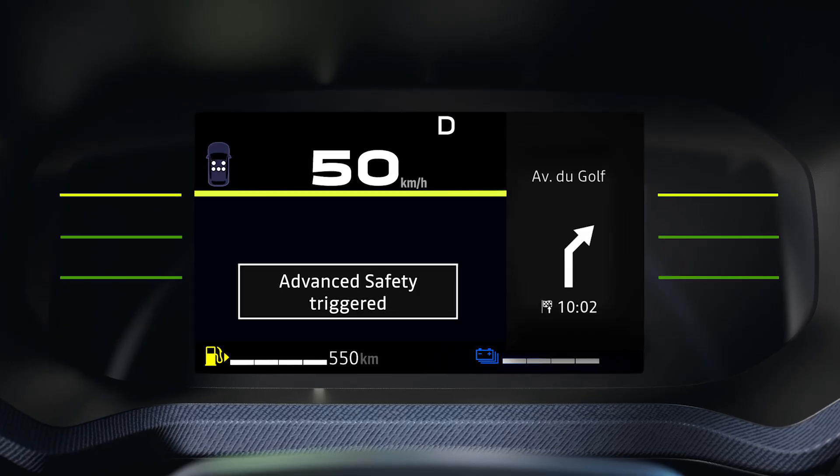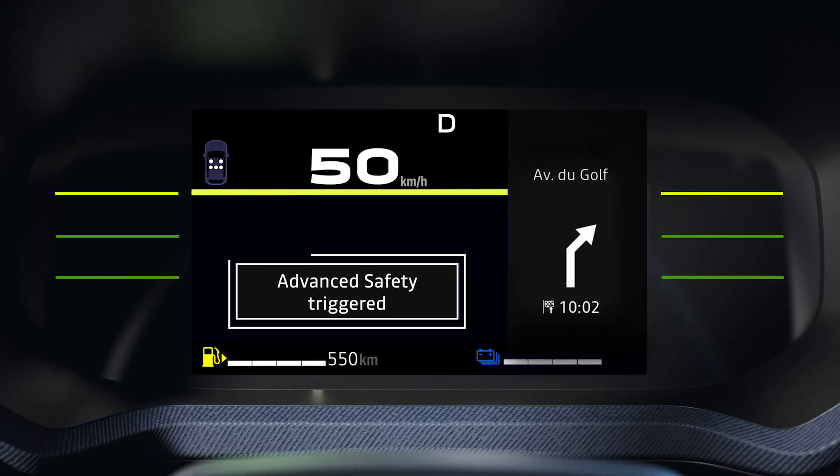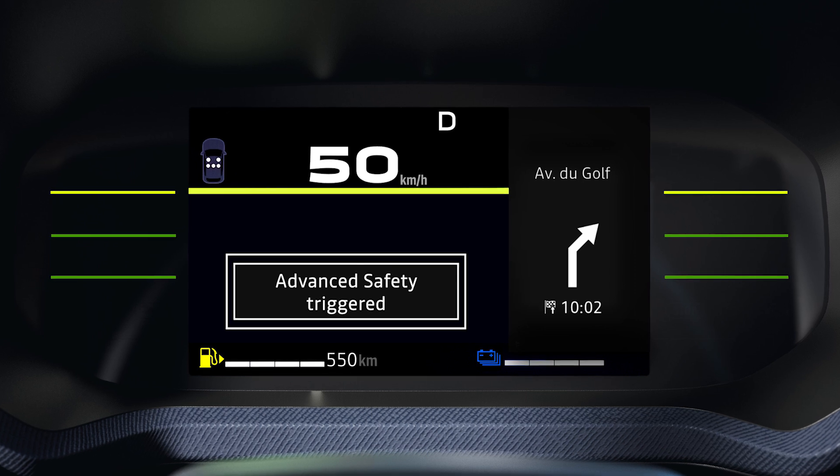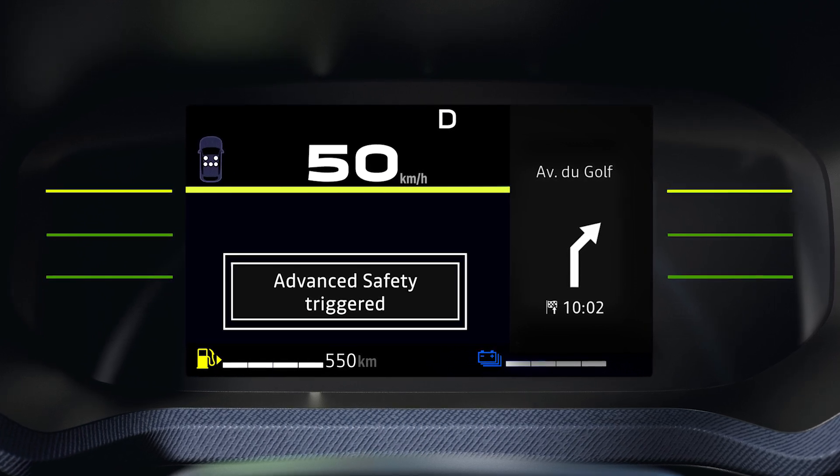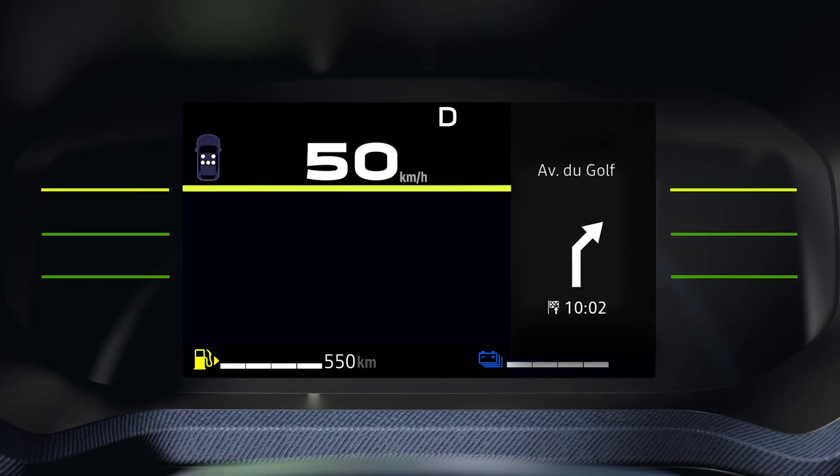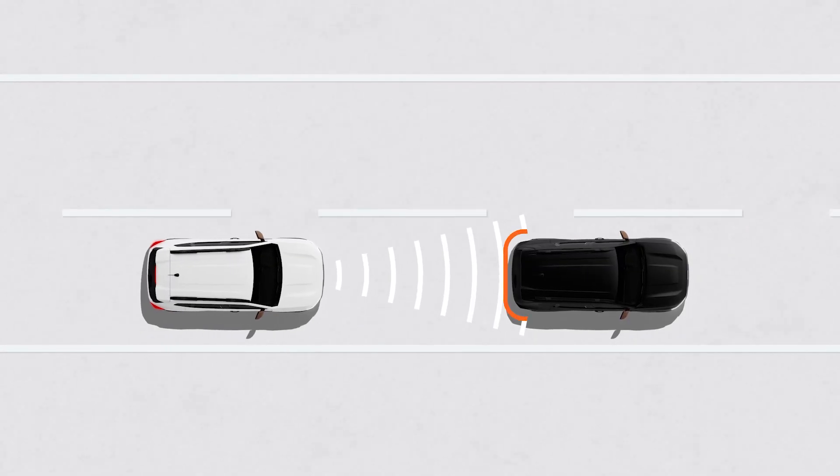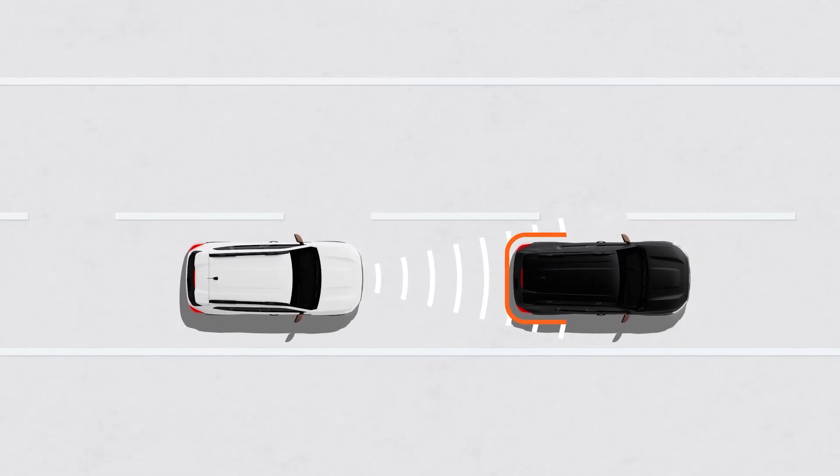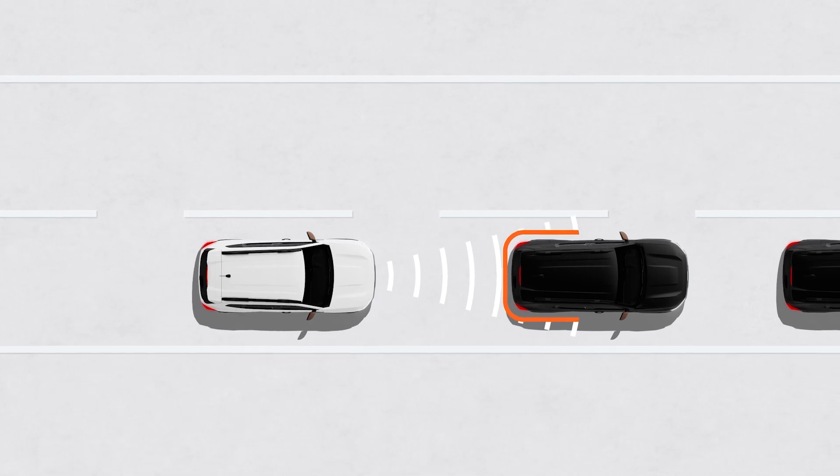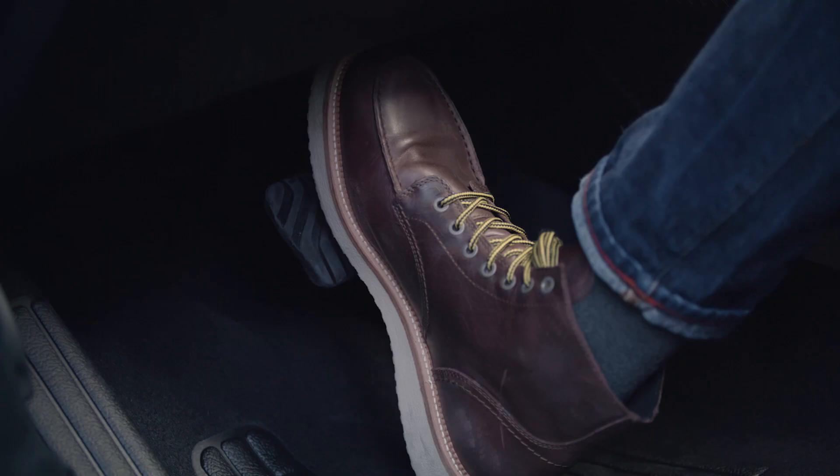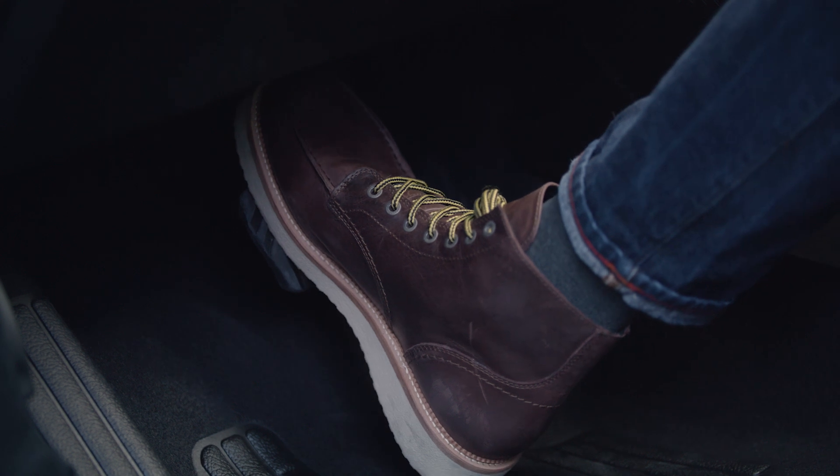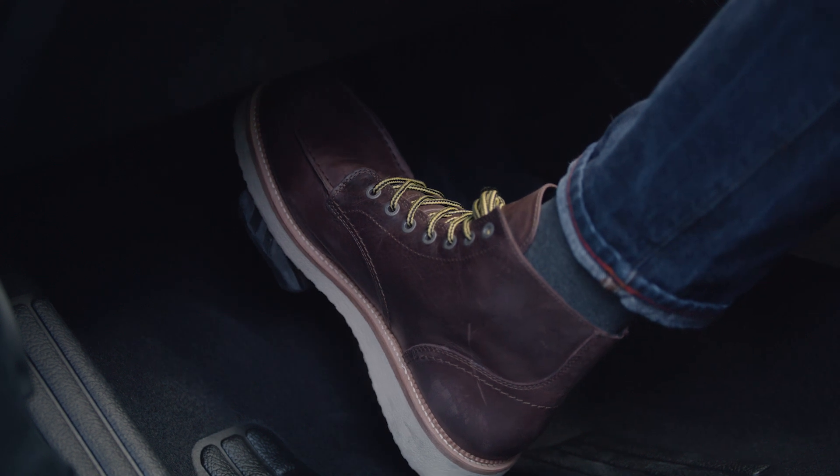After any braking activation by the system, the message 'advanced safety triggered' will be displayed. In the case of a complete halt, the system ceases to apply the brakes. If necessary, you must depress the brake pedal to keep the vehicle stationary.